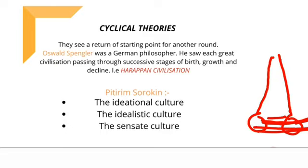German philosopher Oswald Spengler kehte hain ki great civilizations pass through successive stages of birth, growth, and decline. Pehle birth hota hai, phir growth hoti hai, phir khatam hona shuru ho jaata hai. Jaise ki Harappa civilization — aap sab ko pata hoga — Harappa civilization kis tarike se grow hui, phir uske baad decline ho gayi. Uske decline hone ki alag-alag theories hain.